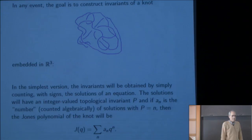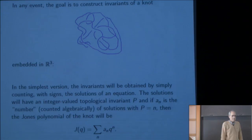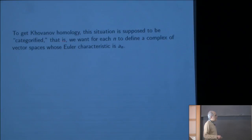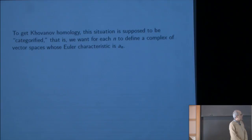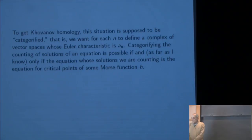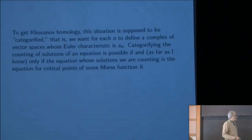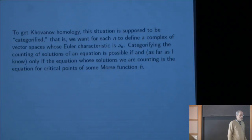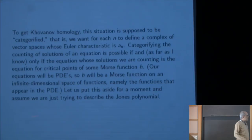To get Khovanov homology, the situation is supposed to be categorified. That means that for each n, we want to define a complex of vector spaces whose Euler characteristic is a_n. Categorifying the counting of solutions of an equation is possible if, and as far as I know only if, the equation whose solutions we're counting is the equation for critical points of some Morse function. Here this will be a Morse function in infinite dimensions, because the equation we're studying is already a partial differential equation. But the answer we'll arrive at will be one where the equations we're counting are equations for a critical point of something, so categorification will be possible.